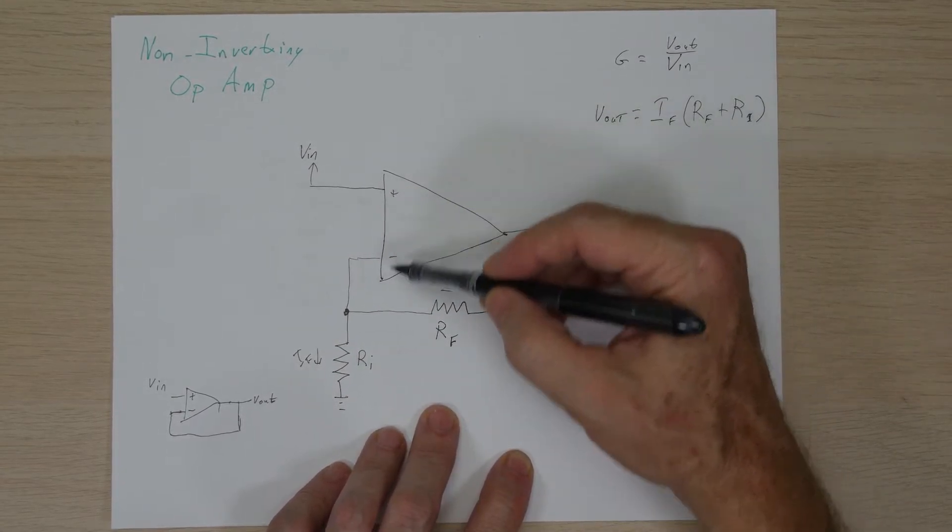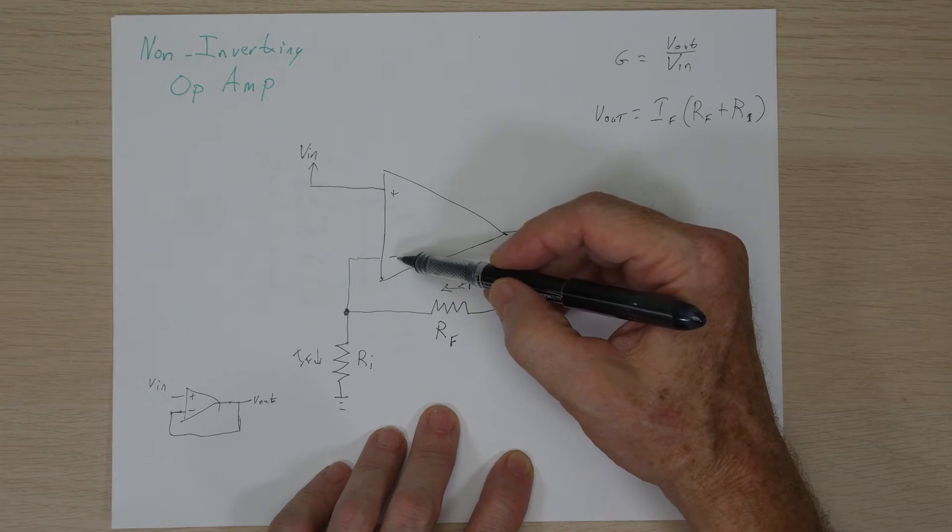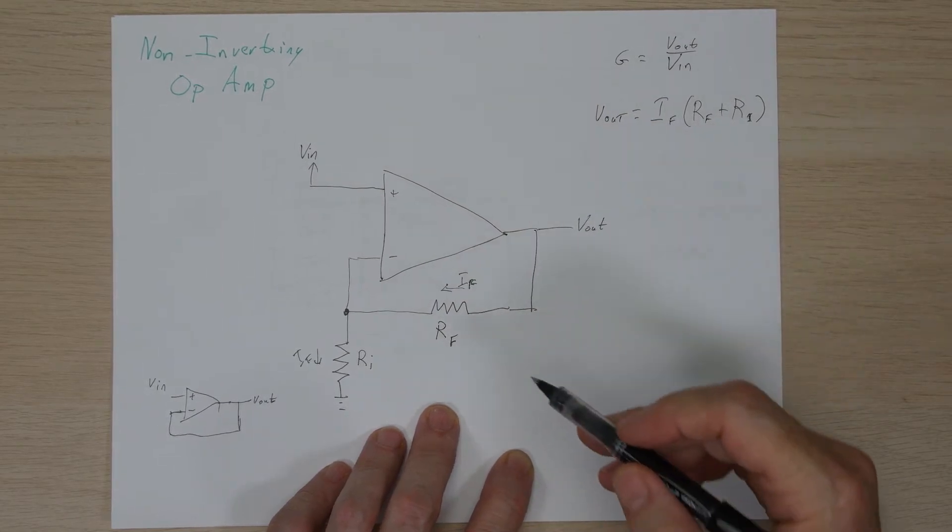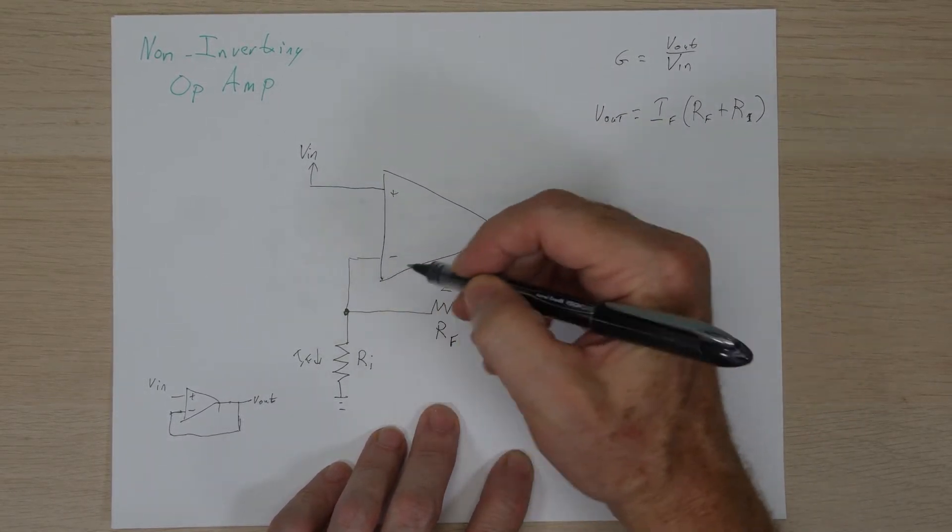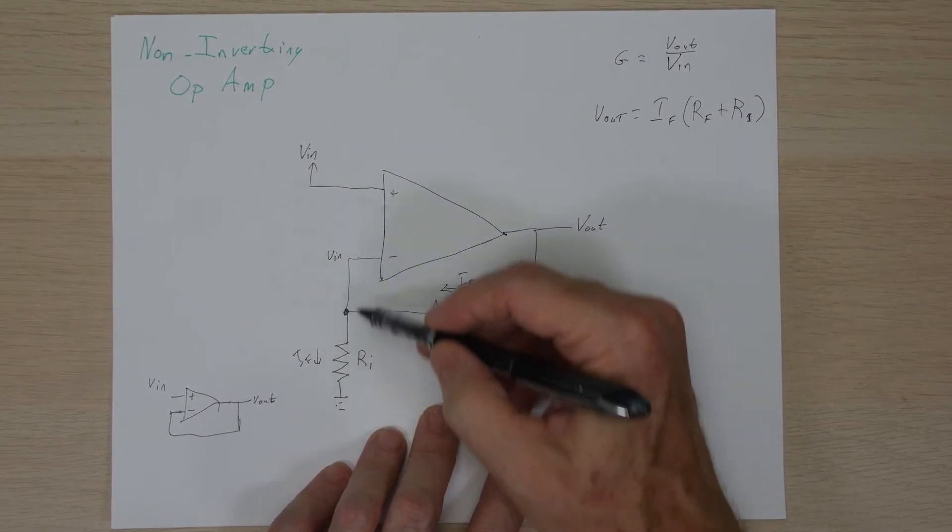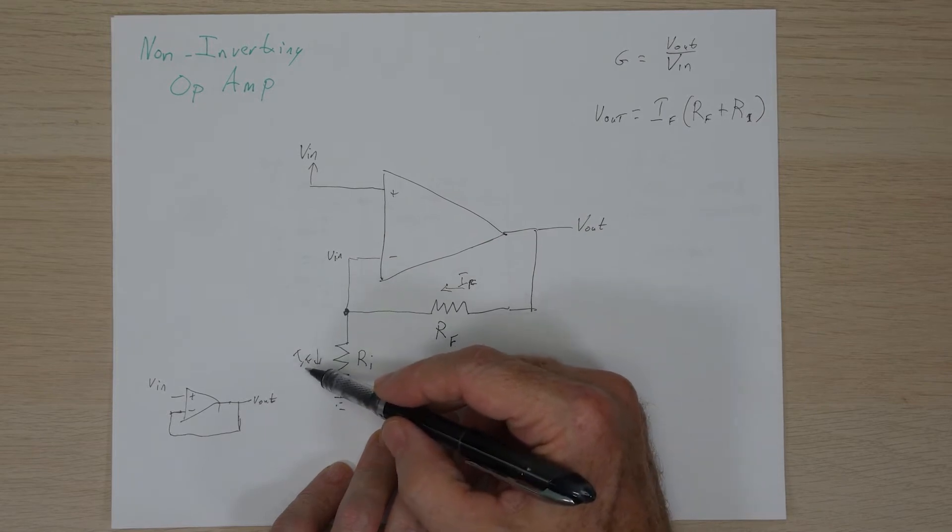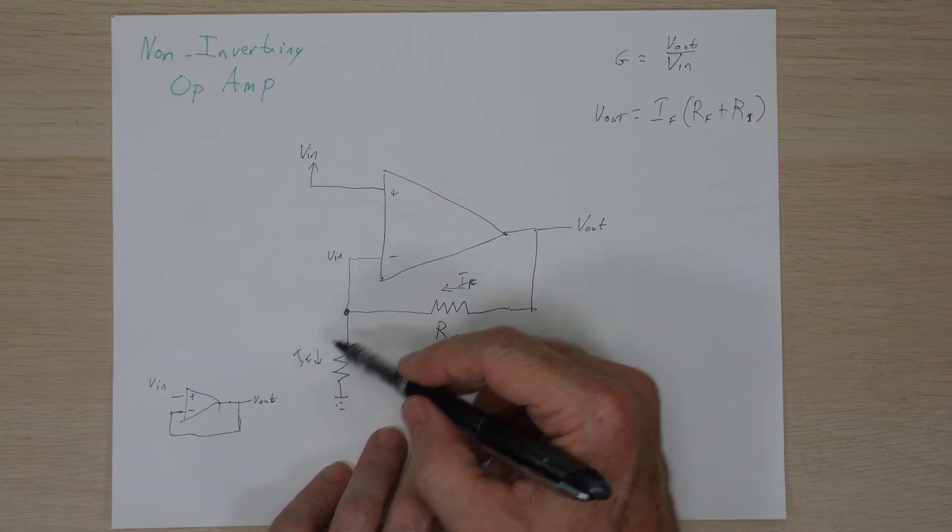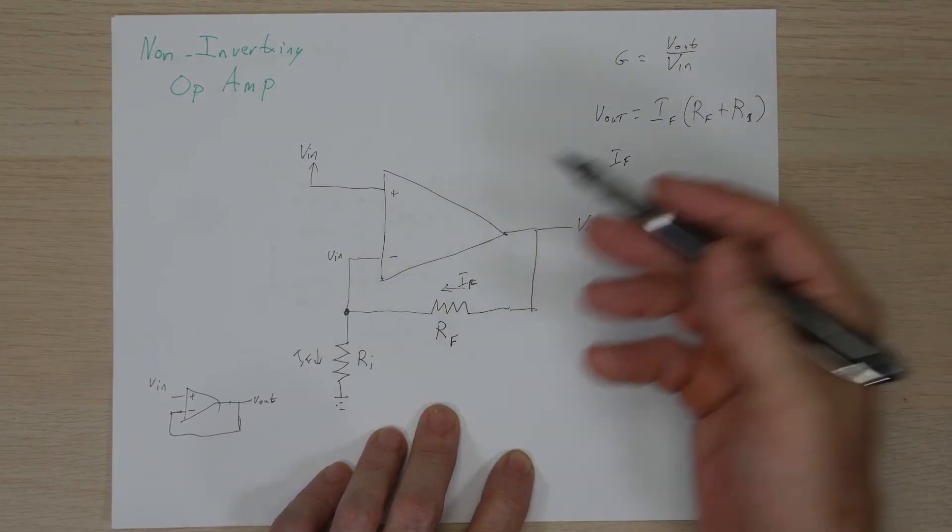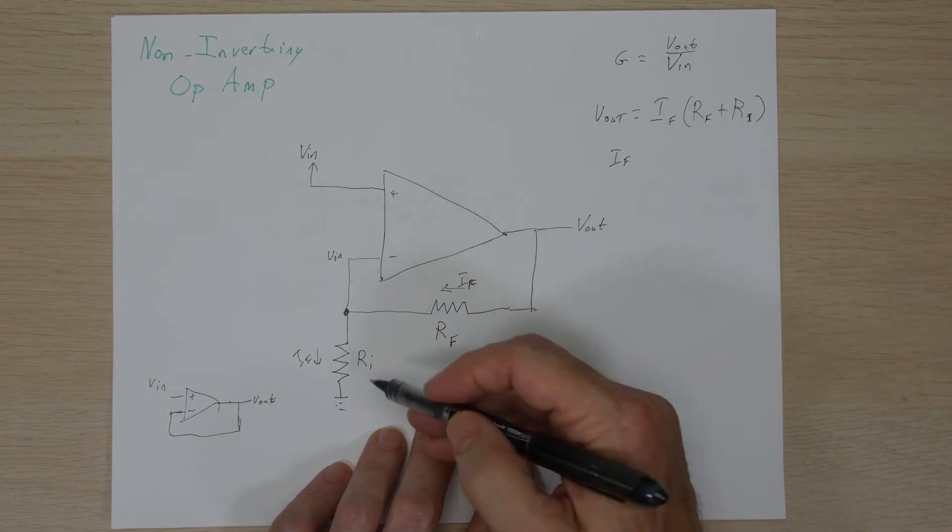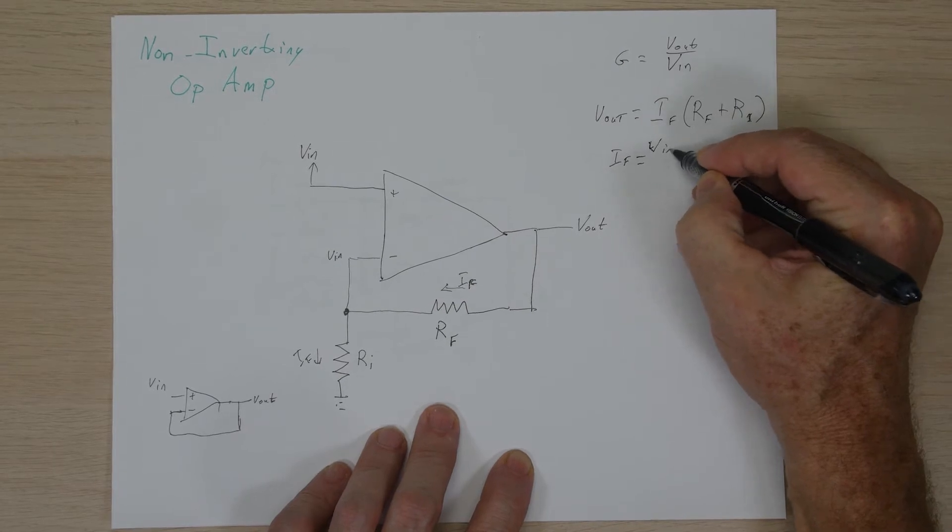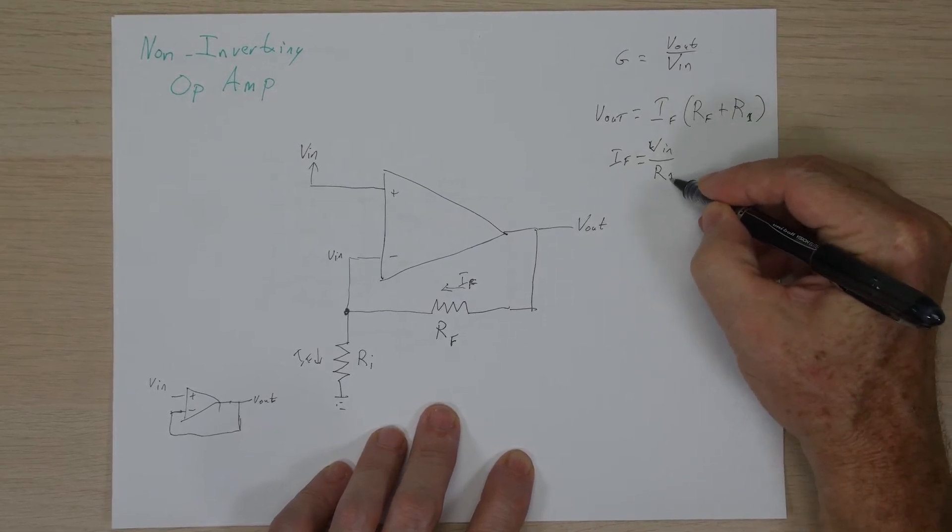So the other thing we know is that these two inputs to the op amp will be held at roughly the same voltage. In this case, we have V in here, sort of setting the reference that it'll be. So from that, we also know that this voltage here will be V in. And if we look, we have V in to ground, and we once again can use Ohm's law to solve for the current, the feedback current at this by knowing that the current is equal to a voltage divided by resistance. So in this case, it'll be V in divided by R1.